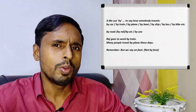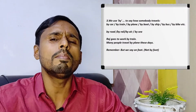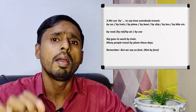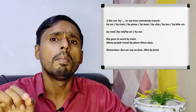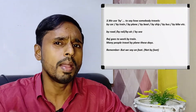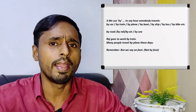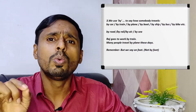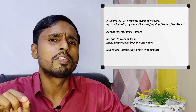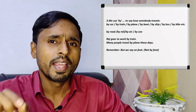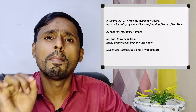In the same way, we use 'by' to say how somebody travels: by car, by train, by plane, by boat, by ship, by bus, by bike, etc. Also by road, by rail, by air, by sea. For example, 30 minutes away by bus. Raj goes to work by train. Many people travel by plane these days. But we say 'on foot', not 'by foot'.